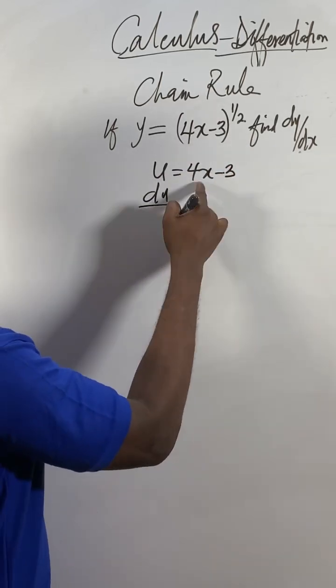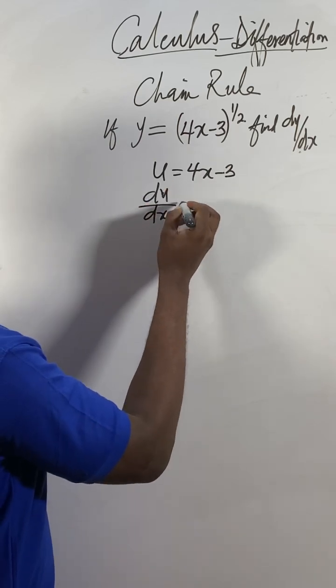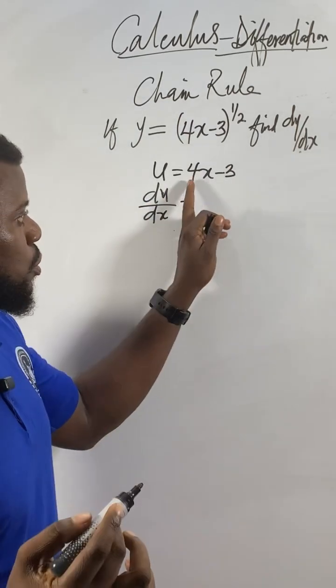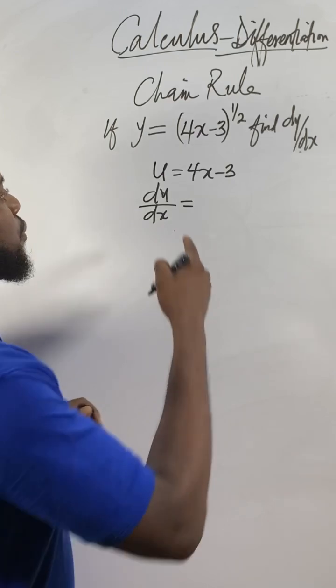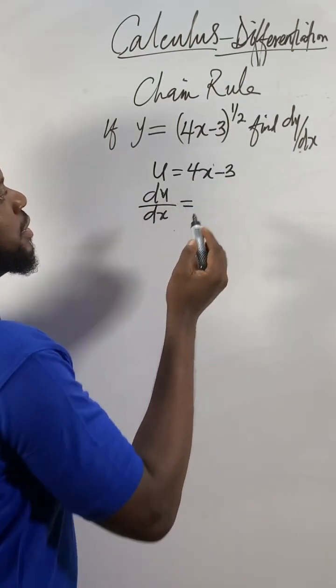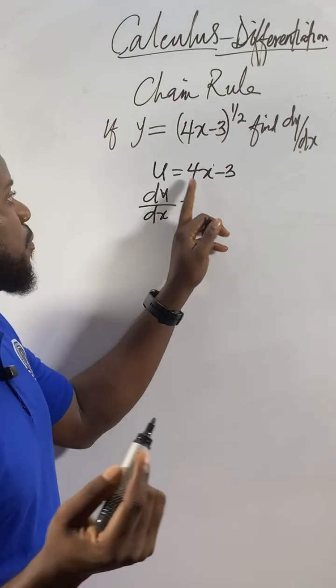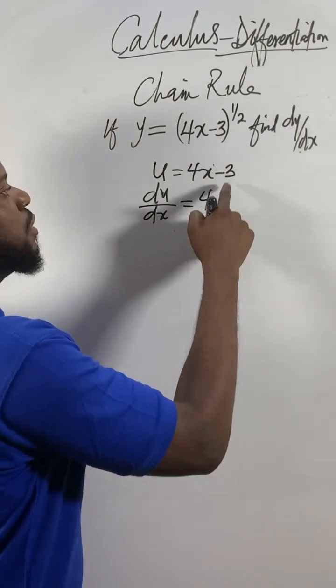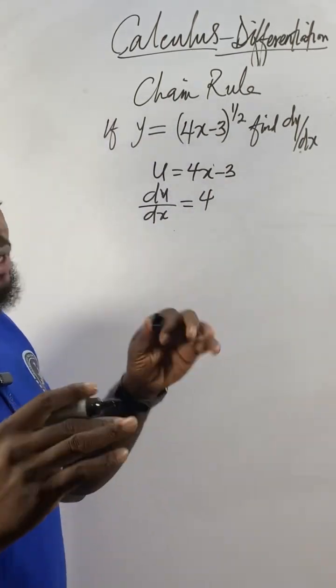Now differentiate u with respect to x. The derivative of u with respect to x is the derivative of 4x. When you differentiate x, you get the power of 1. The derivative of x which is a variable is 1, so 4 times 1 is 4. The derivative of the constant is 0.